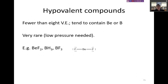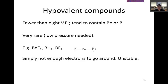Some examples would include beryllium difluoride, boron hydride, or boron fluoride. And this is where there's simply not enough electrons to go around. These molecules are very unstable.